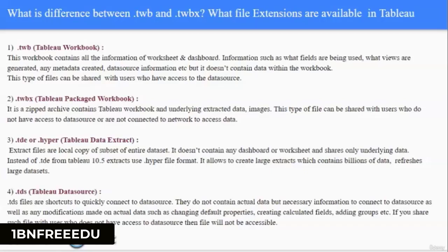Next question: What is the difference between .twb and .twbx? What are the file extensions available in Tableau? The first is .twb which is Tableau Workbook — it contains all information of your worksheets and dashboards including views, metadata, and data source information, but it does not contain the actual data. We share these files with colleagues or clients who have access to the data source.